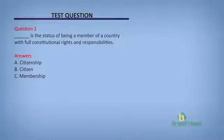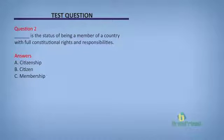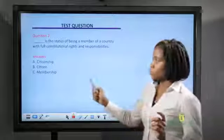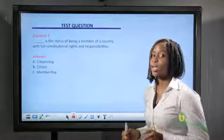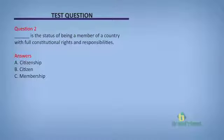The second and last question: blank is the status of being a member of a country with full constitutional rights and responsibilities. Option A, citizenship. B, citizen. C, membership. Did you say C? No, that's very wrong. Or B? That's wrong too. Remember, we said a citizen is an individual who is a member of a particular country, while citizenship is the status of being a member of a country with full constitutional rights and responsibilities. A is the correct answer.